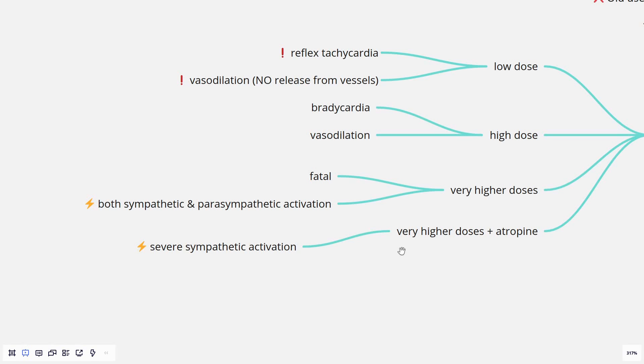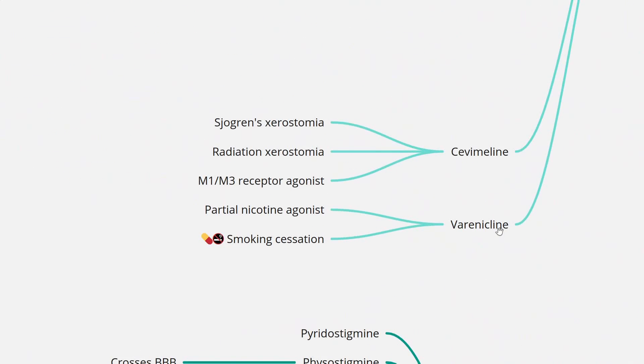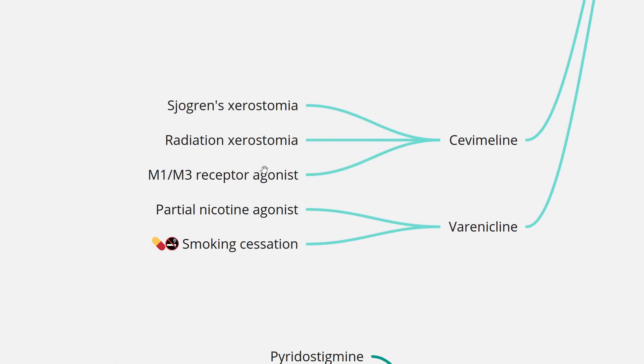When very high doses are given along with atropine, that results in severe sympathetic activation, because atropine can block the muscarinic receptors, which are those peripheral actions of acetylcholine. Now coming to the two relatively newer drugs: cevimeline and varenicline. Cevimeline is an M1 or M3 receptor agonist, and it is used in Sjögren's disease, xerostomia, and radiation xerostomia. Varenicline is a partial nicotine agonist; it is used in smoking cessation.